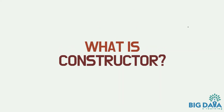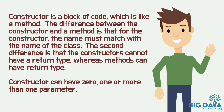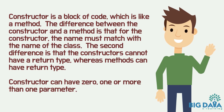Constructor is a block of code which is like a method. The difference between the constructor and a method is that the constructor's name must match with the name of the class. The second difference is that constructors cannot have a return type, whereas methods can have a return type. A constructor can have 0, 1, or more than one parameter.